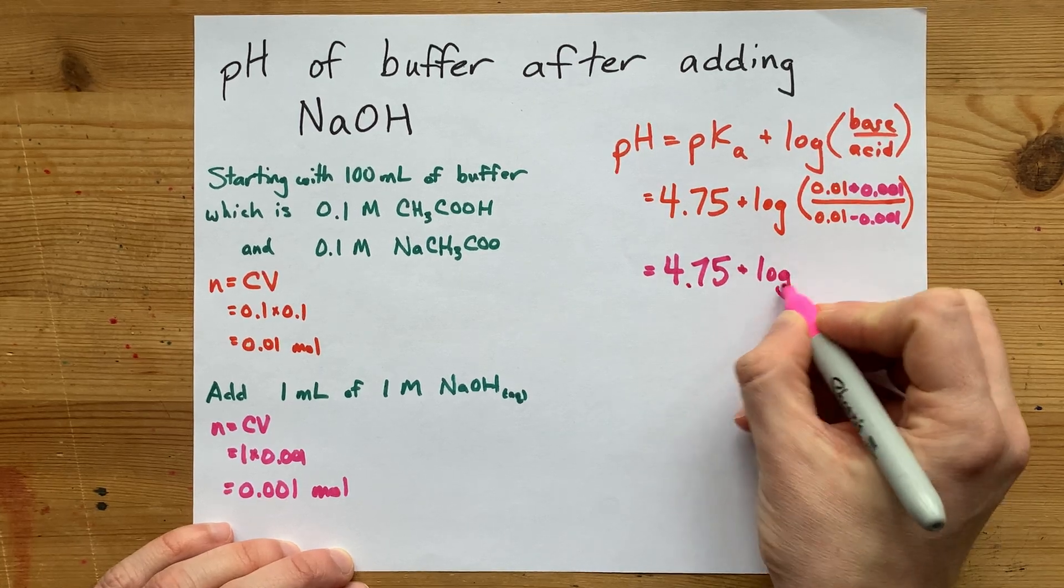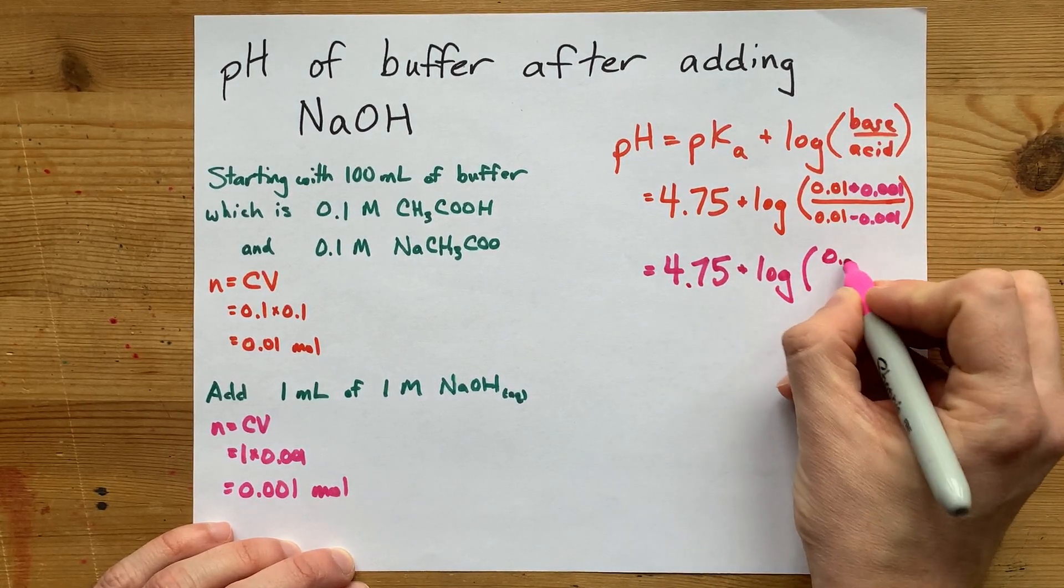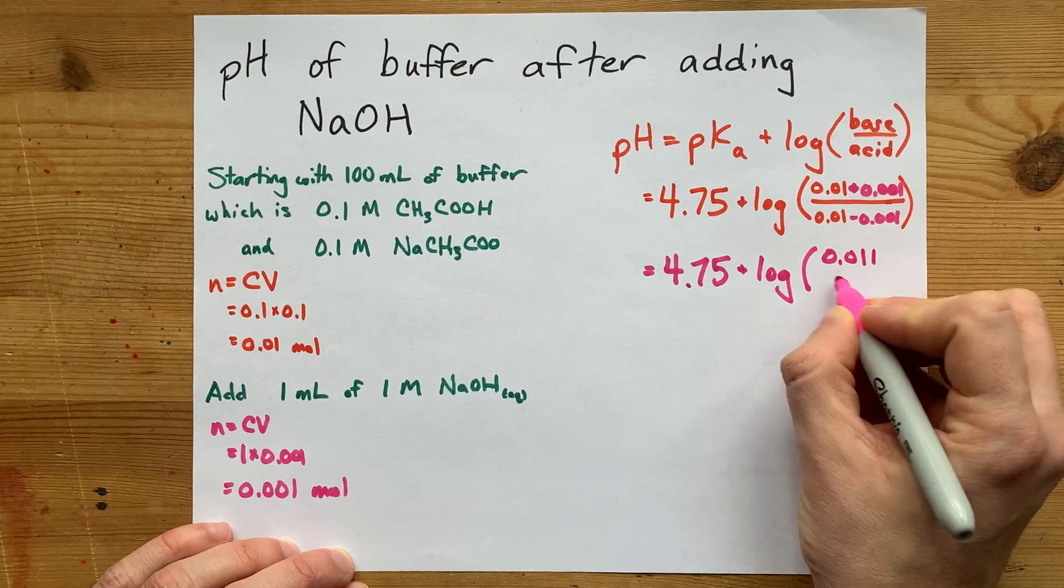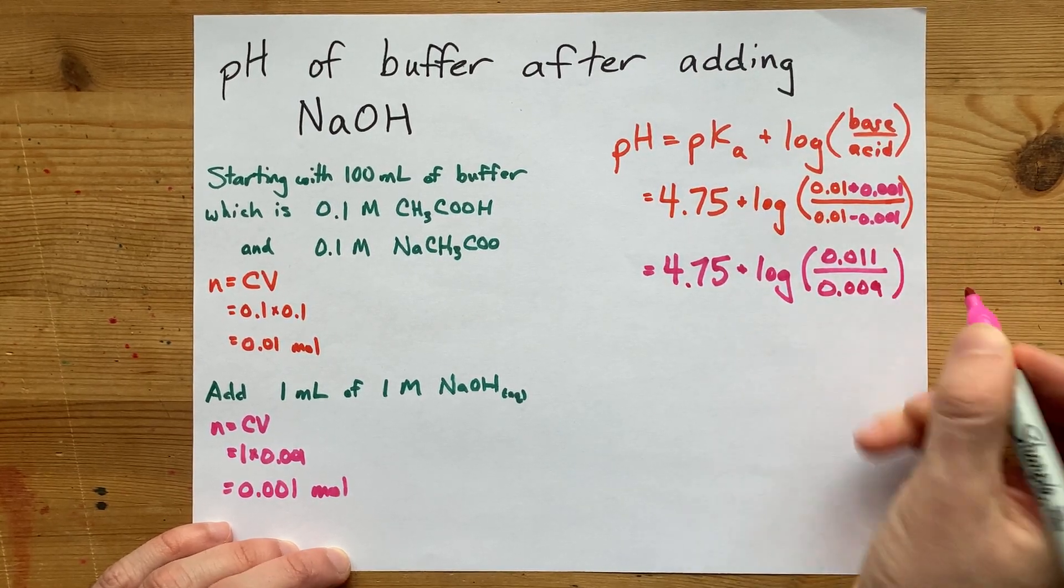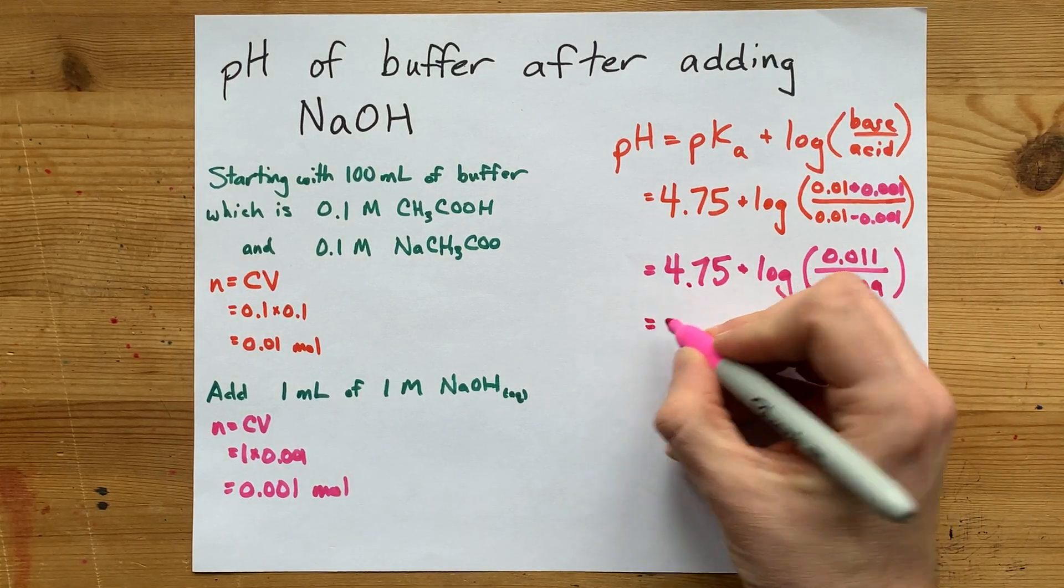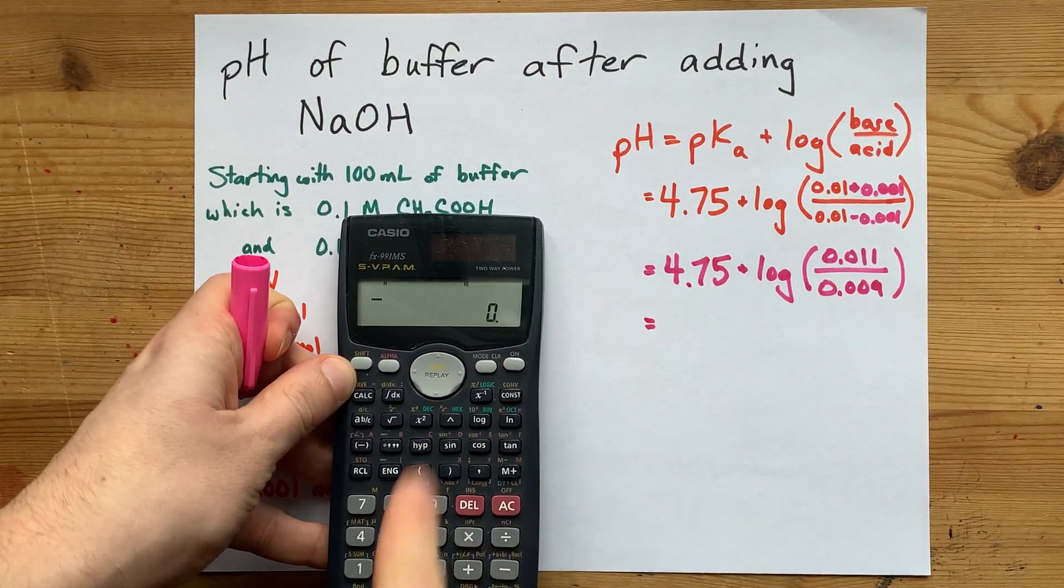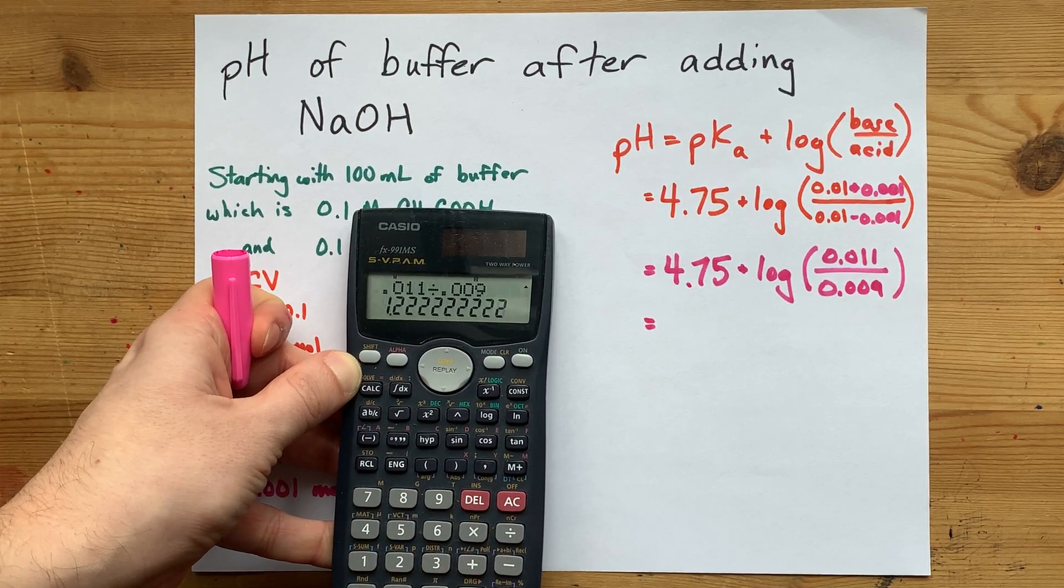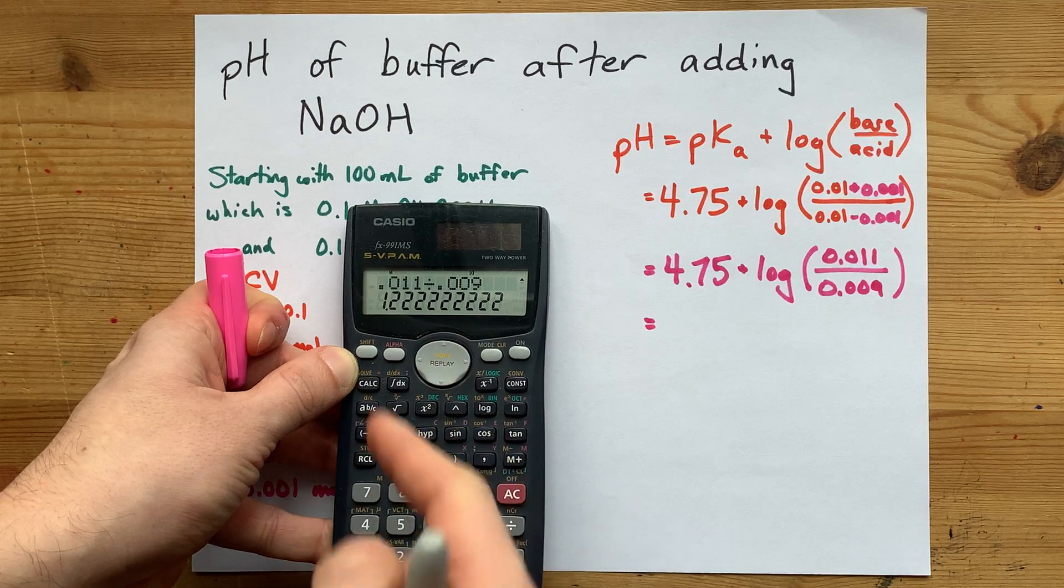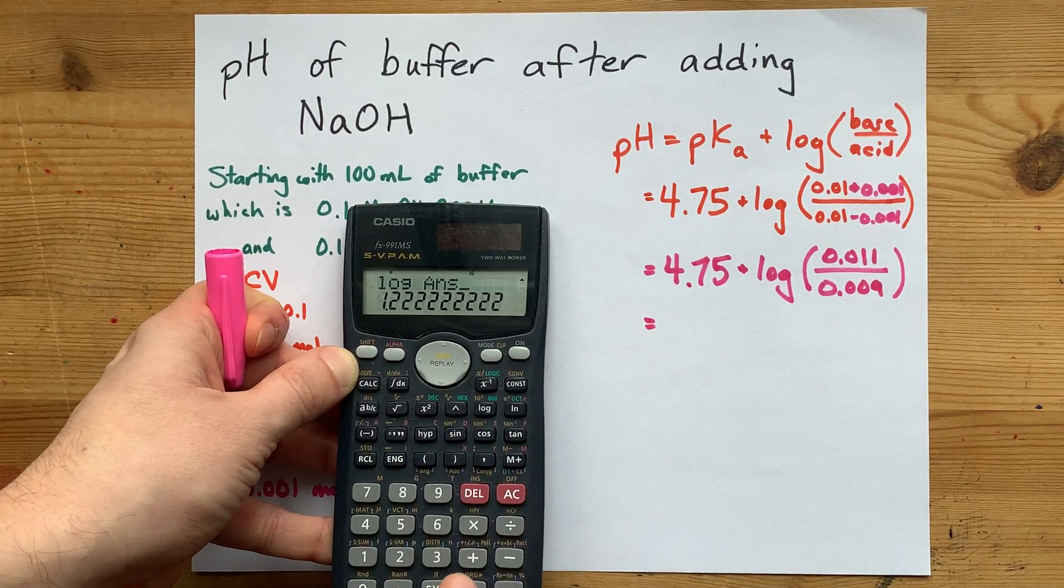We're going to add on the log of, now when I add those I get 0.011. When I take that away I get 0.009. Now I'm going to do that on my calculator. I got 0.011 divided by 0.009. I get 1.222. And I'm going to take the log of that.